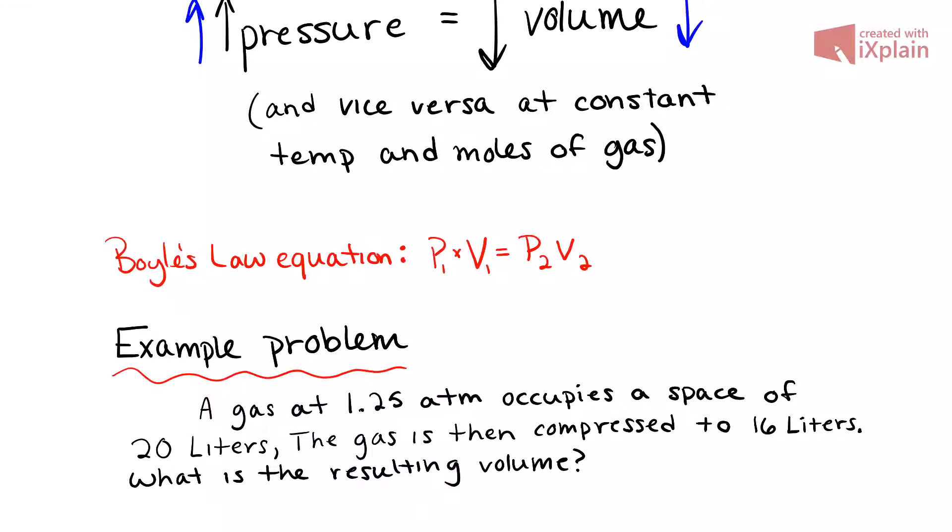The equation is P1 times V1 equals P2 times V2. This is the equation you're going to be using in any Boyle's law problem that you're given, as long as it only is a matter of pressure and volume and not temperature or moles or anything like that.